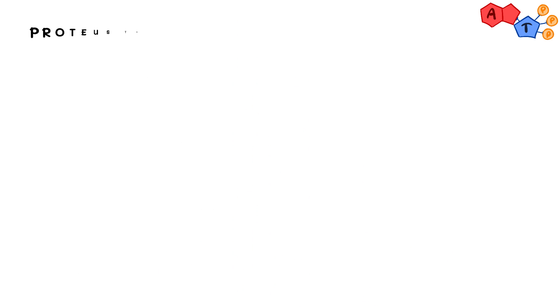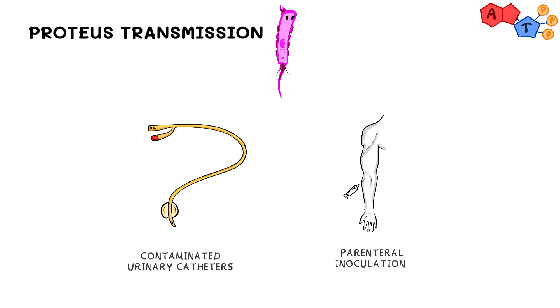Now in regards to its transmission, we have mentioned before that Proteus species are part of the human intestinal flora, so they can cause infection upon leaving that location. They may also be transmitted through contaminated catheters, particularly urinary catheters, or by accidental parenteral inoculation. However, the specific mode of transmission has not been identified yet.